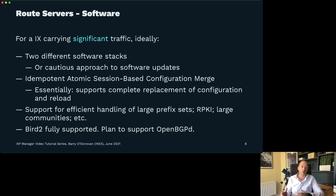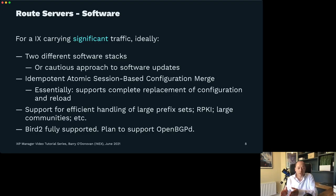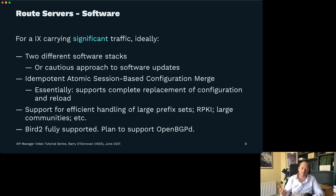Without two different software stacks, you want a really cautious approach to software updates: if BIRD has a new version, upgrade one of them, wait a few weeks unless it's a security problem, then upgrade the other one. The important concept is idempotent atomic session-based configuration merge — meaning the software should support a complete replacement of the configuration and a reload. With BIRD, you can download a complete full configuration file and just tell BIRD to reconfigure itself. You also definitely want support for efficient handling of large prefix sets, RPKI, and large communities — BIRD ticks all those boxes, and BIRD 2 is what you want to use nowadays.